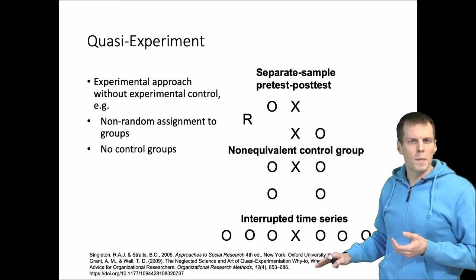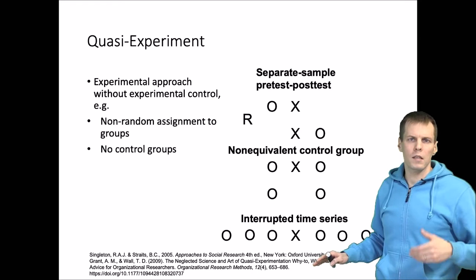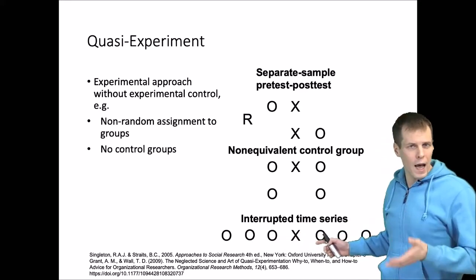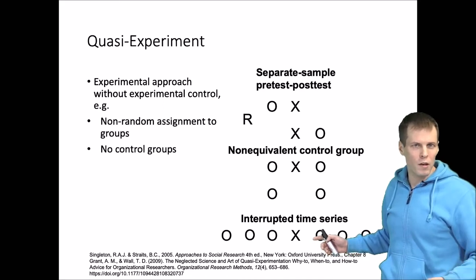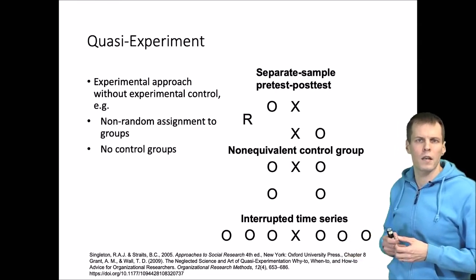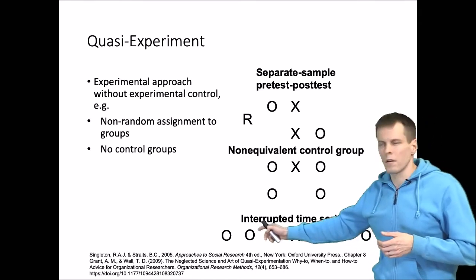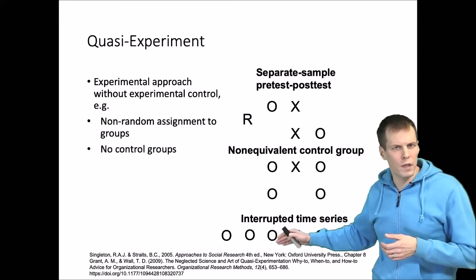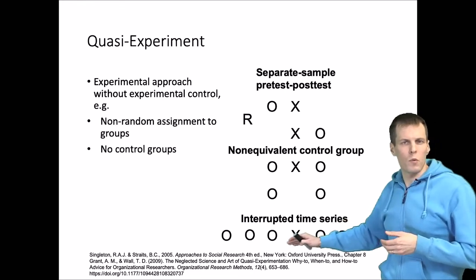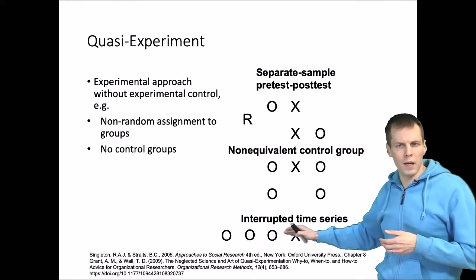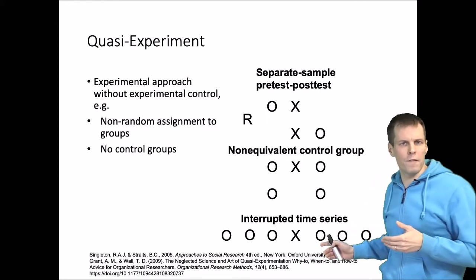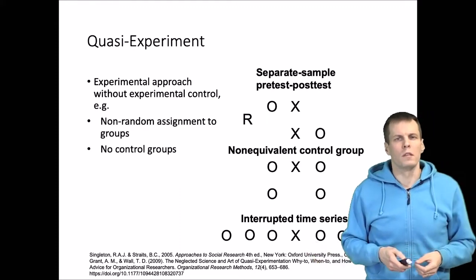Then we have the interrupted time series design, sometimes classified as pre-experimental because it lacks a control group. The idea is that we have a time series of repeated measures, something happens or a treatment is administered at a certain point, and then we follow the time series again. This can be considered quasi-experimental because we can use the individual or group before the treatment as a counterfactual — we estimate the trend before, estimate the trend after, and infer what would have happened if the treatment hadn't occurred.